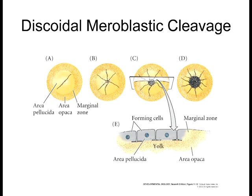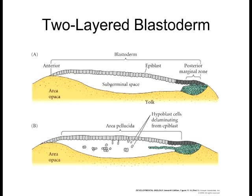If you look at the chick embryo, there are two main areas: the area pellucida, which is the lighter area, and the area opaca, which is more opaque — like looking through a foggy mirror. The area opaca is where the cells undergo cleavage and form blastomeres, building up and using nutrients. The reason the area pellucida appears lighter is because those cells pull fluid in to form the blastocoel just beneath — sometimes called the sub-germinal cavity or sub-germinal space.